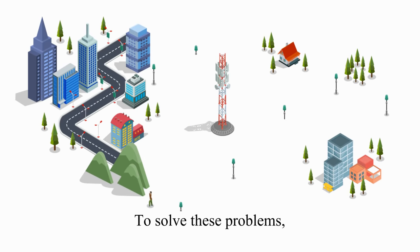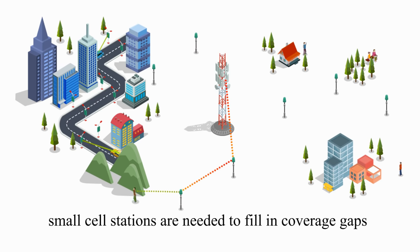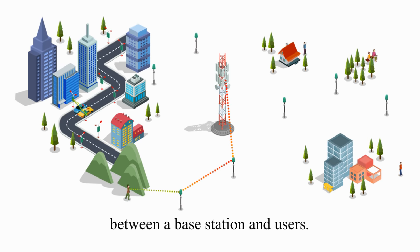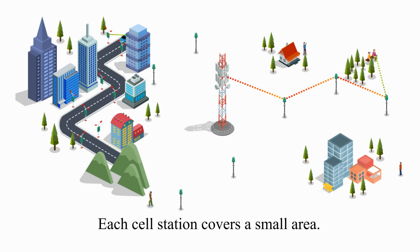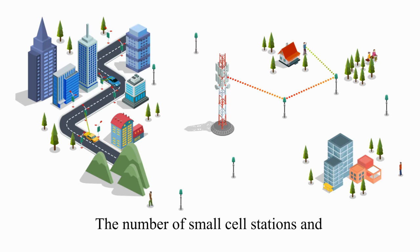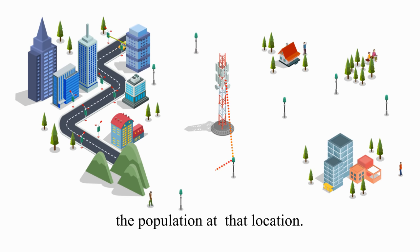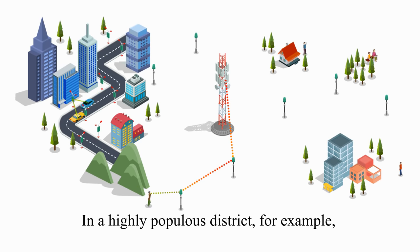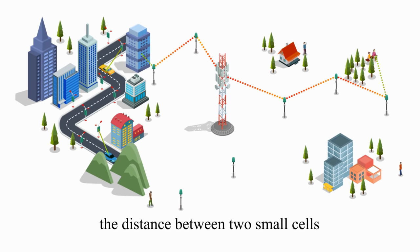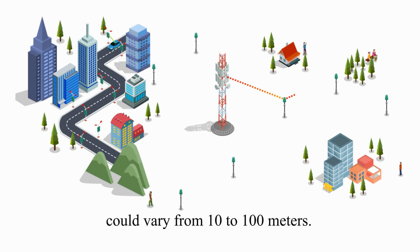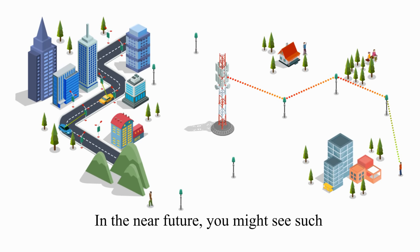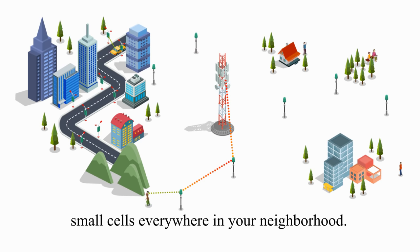To solve these problems, small cell stations are needed to fill in coverage gaps between the base station and users. Each cell station covers a small area. The number of small cell stations and the distance between them depends on the population at that location. In a highly populous district, for example, the distance between two small cells could vary from 10 to 100 meters. In the near future, you might see such small cells everywhere in your neighborhood.